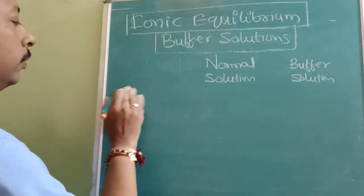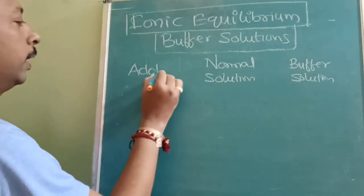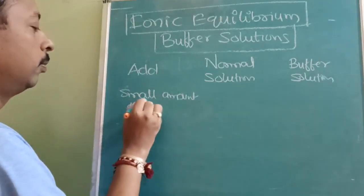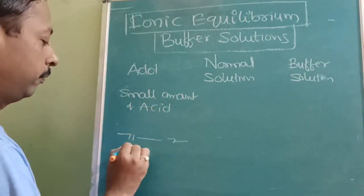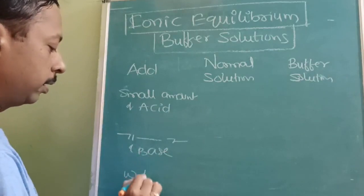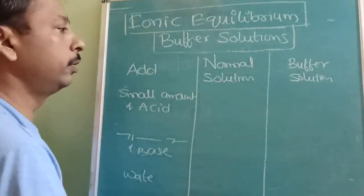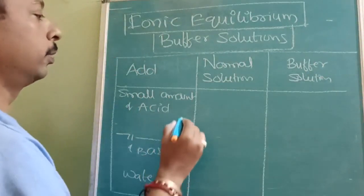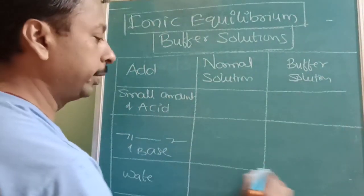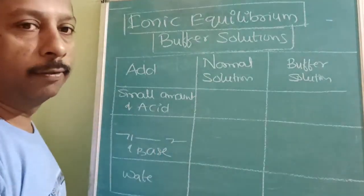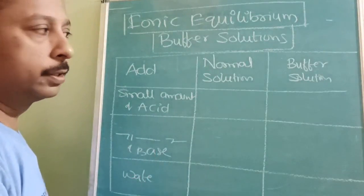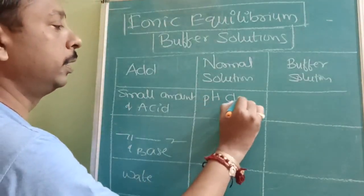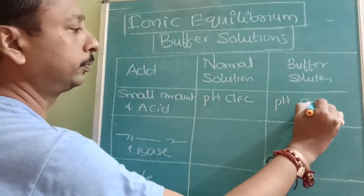Normally we can add a small amount of acid, a small amount of base, or water. In a normal solution, if you add acid to any solution irrespective of whether it is acid, base, or any solution, pH will decrease. For a buffer, pH stays constant.